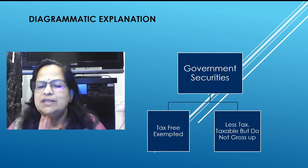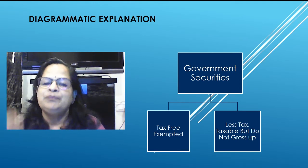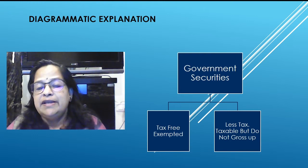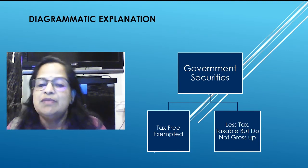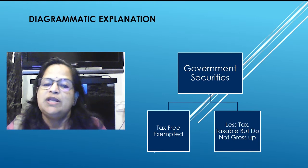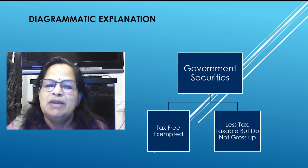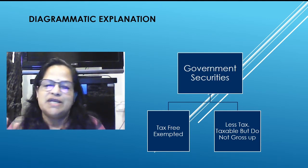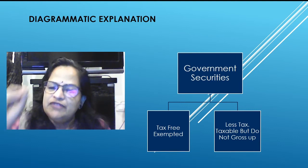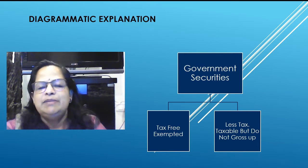I am giving a complete list of tax-free securities for reference. 'Less tax' means TDS has been paid by the issuing organization and we receive only the net amount, so we must gross it up. 'Taxable but do not gross up' means the value given in the question can be used directly. If a government security is tax-free, it is exempted — do not include it in the computation. If it is less-tax, it is taxable but you do not gross it up.